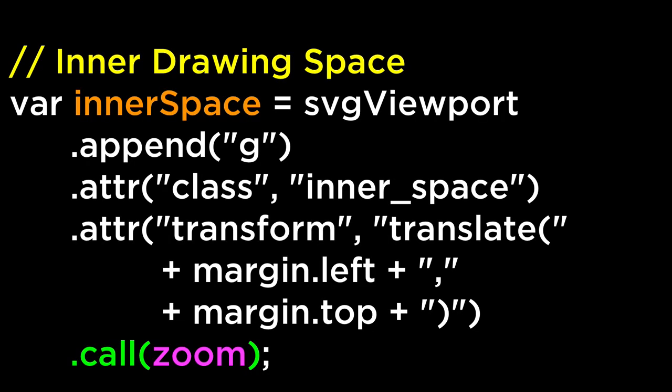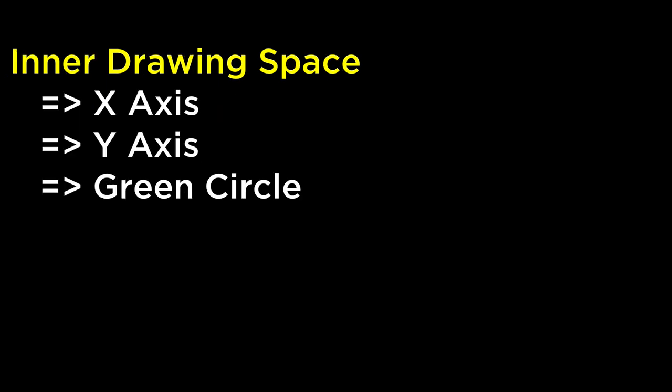The solution. If we think back to the code we created, the inner drawing space is the SVG element that the zoom behavior was called on. The SVG group element and everything inside of it now had the zoom behavior. Within the inner drawing space, we appended an x-axis, a y-axis, and the green circle. Each of these elements were placed according to linear scales and the zoom scale. Each element was able to trigger the zoom behavior because the zoom behavior gets called on an element and all of its children elements. Since the x-axis, y-axis, and the green circle are children elements of the inner drawing space, they too received the zoom behavior.